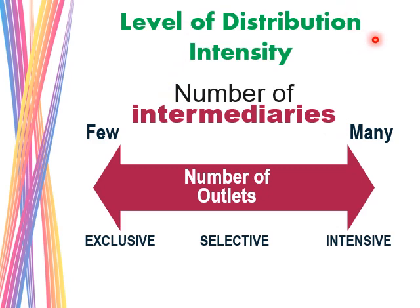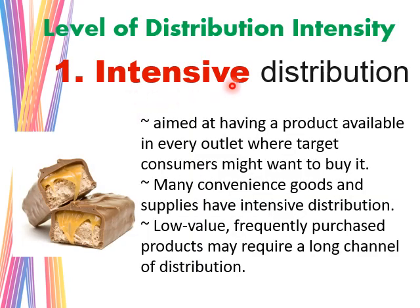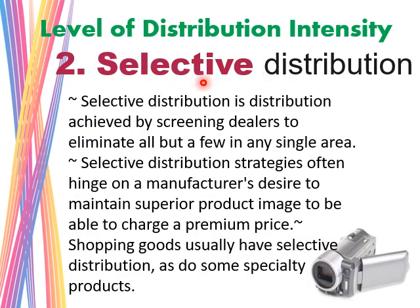The last part of this chapter is the level of distribution intensity, which relates to the number of intermediaries and outlets. If there are few outlets, it is called exclusive distribution. If there are many outlets and many intermediaries, it is called intensive distribution. In between is selective distribution. Intensive distribution aims to have a product available in every outlet — targeting consumers who want to buy it everywhere. These are typically low-value, frequently purchased, convenient products that may require long channels of distribution.